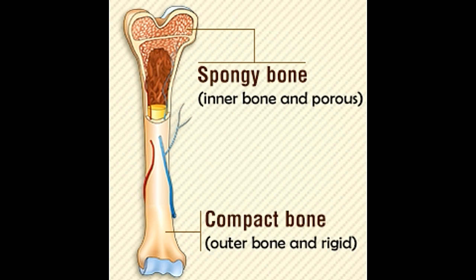Did you know? Compared to compact bones, spongy bones have a higher surface area and increased vascularity, which allow better exchange of nutrients from the blood to the bone tissue. As the name suggests, a compact bone is strong and rigid, thanks to its high mineral content.